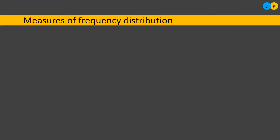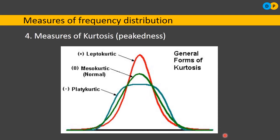The fourth measure is measure of kurtosis, which refers to peakedness. When plotting the frequency distribution as a graph, we examine whether there is a sharp peak, a flat shape, or a normal one. A very peaked graph is referred to as leptokurtic, a normal one as mesokurtic, and a completely flat graph as platykurtic. Using the frequency distribution, we can characterize what the distribution is describing.